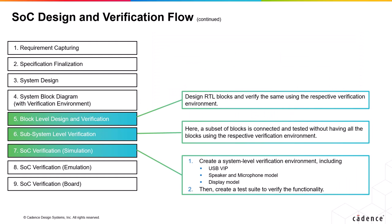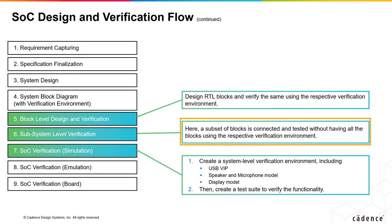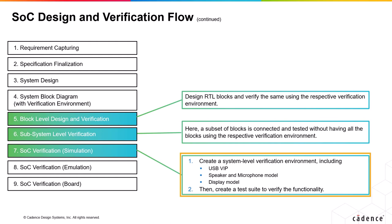This slide explains steps 5, 6, and 7. The fifth step is block level design and verification, where each required block is designed and a respective verification environment is created for testing. RTL coding is done here along with functional behavior testing. The next step connects some blocks to make a subsystem, with subsystem testing done in a separate verification environment, reusing block level environments where possible. Step 7 is to create a system level verification environment that includes all verification blocks — the USB VIP, speaker, microphone, and display models. The integrated SOC is connected to a verification environment for functional testing in simulation, and a test suite is created at system level to verify functionality at the top level.